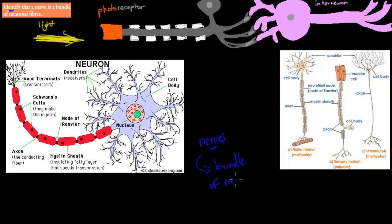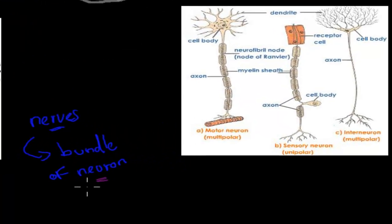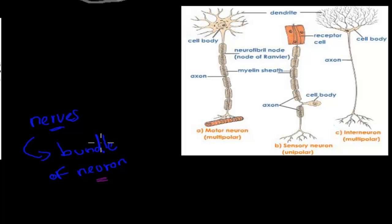The next question would be: what exactly is a neuron? Neurons are the units of the nervous system. Basically, the nervous system is made up of different types of neurons. There are three types of neurons: a motor neuron, a sensory neuron, and an interneuron.